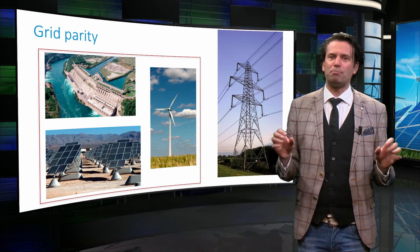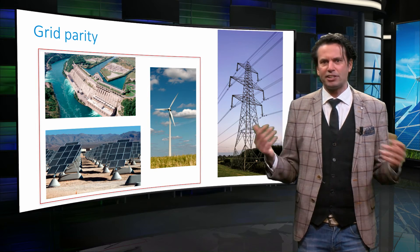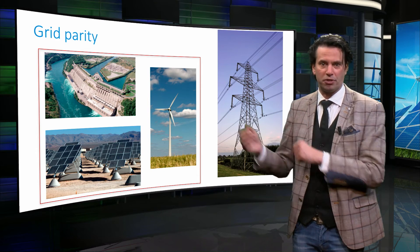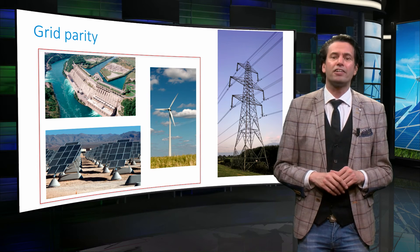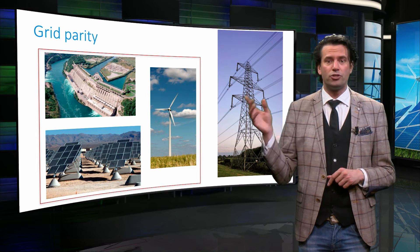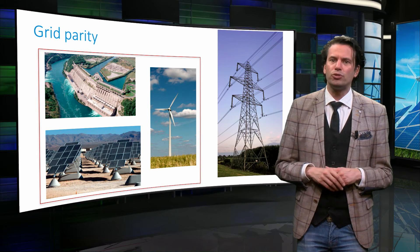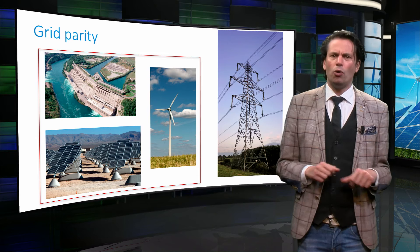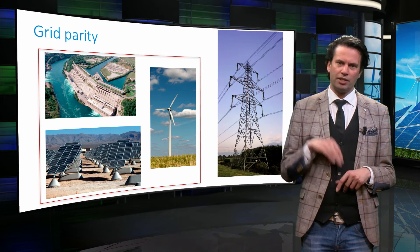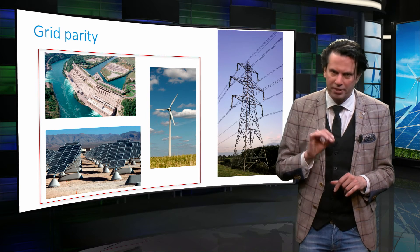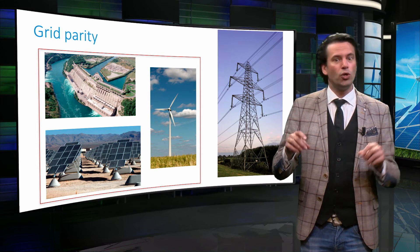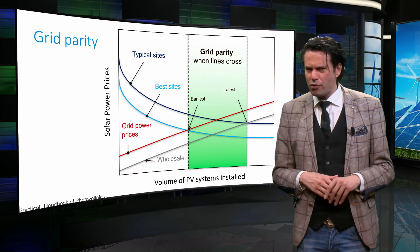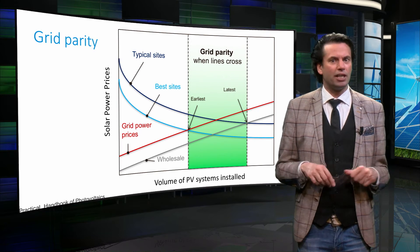Finally, we will discuss the concept of grid parity. Grid parity represents a situation where the levelized cost of electricity from a renewable energy source is equal to the cost of purchasing power from the grid. There is, however, a significant difference between PV and other renewable technologies like wind turbines or hydropower. PV can be scaled down to the level of a single module. It therefore does not require high transmission and distribution costs, which are an essential part of hydro and wind turbines. This means that in the case of grid parity, PV power is effectively competing with the retail grid price. Compared to the wholesale price, PV grid parity for retail grid prices can be achieved more easily, as shown in the graph.